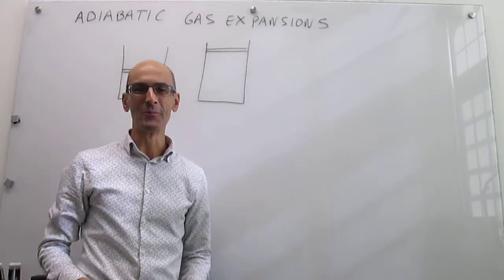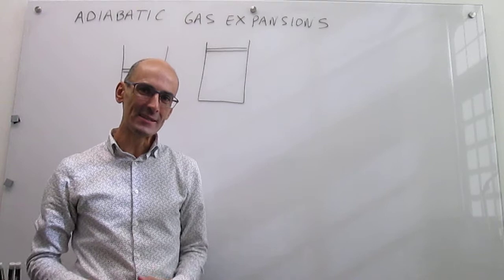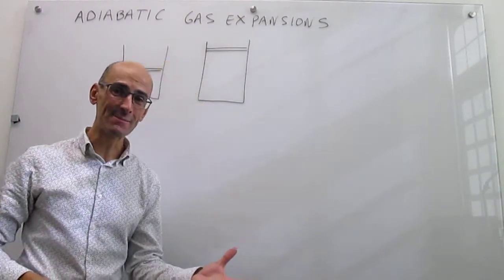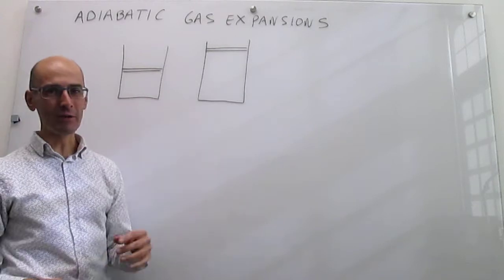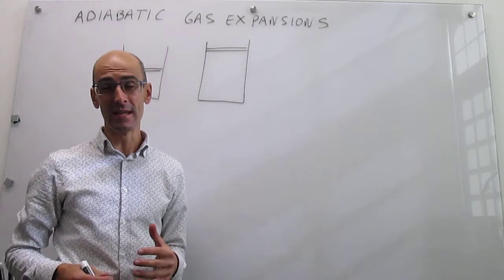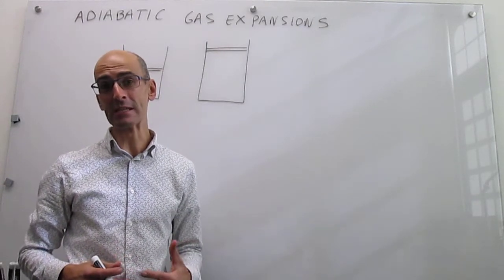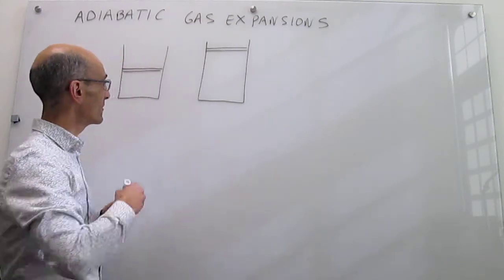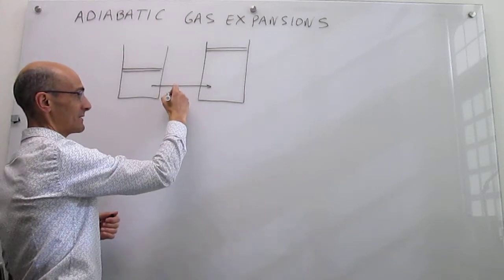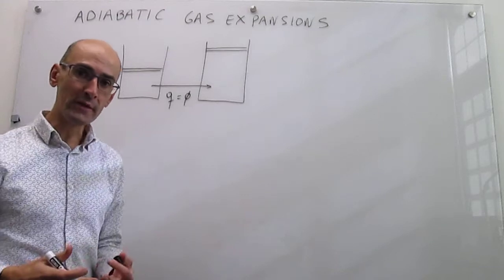In this video we review adiabatic gas expansions. A gas expansion is one in which the heat transfer Q is zero. The definition of an adiabatic process is that energy transfer as heat is zero, so the expansion occurs but Q equals zero.